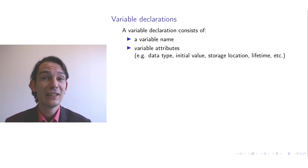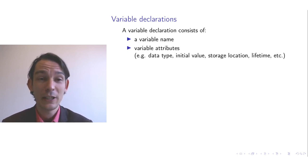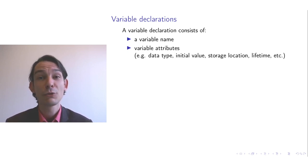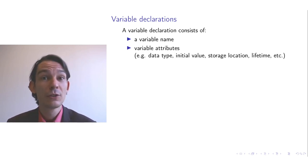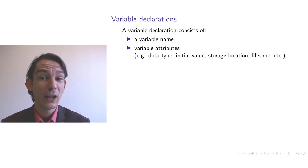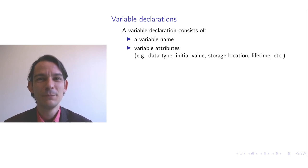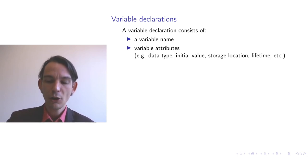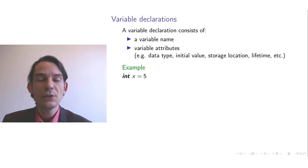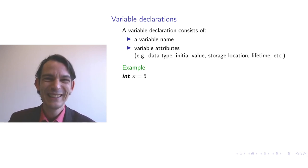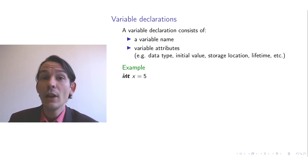Moreover, you can annotate a variable declaration with the storage location. In some programming languages, like Rust, the notion of lifetimes of a variable is also explicit in a variable declaration. For example, a declaration might declare a variable with the name x, with the data type int — the mathematical integers — and the initial value 5.